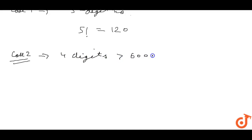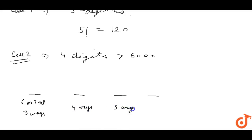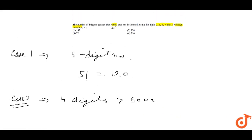For 4-digit numbers greater than 6000, the thousands place can be filled by 6, 7, or 8 — that is 3 ways — because 3 and 5 are too small. The remaining three places can be filled in 4 ways, then 3 ways, then 2 ways respectively.